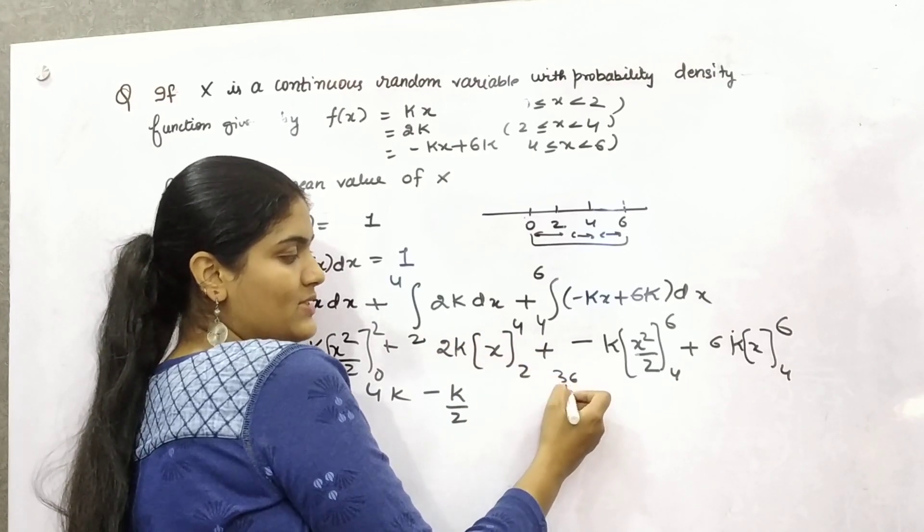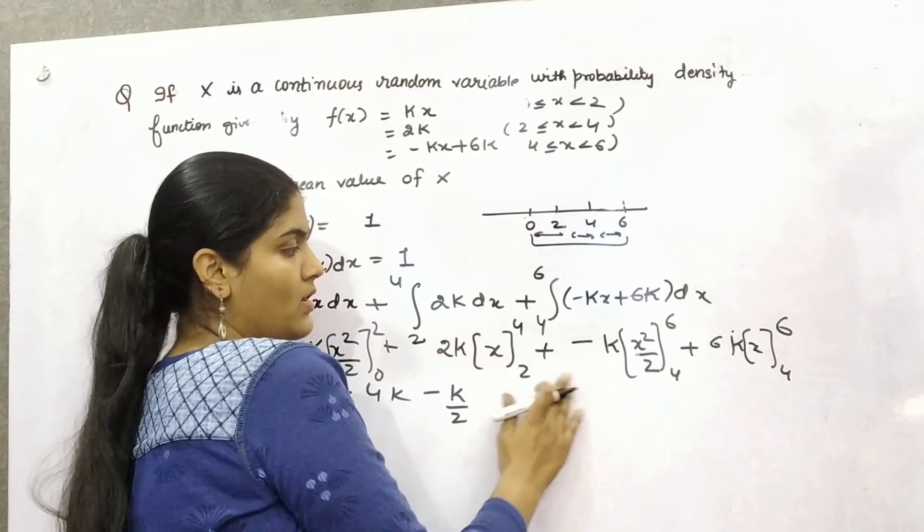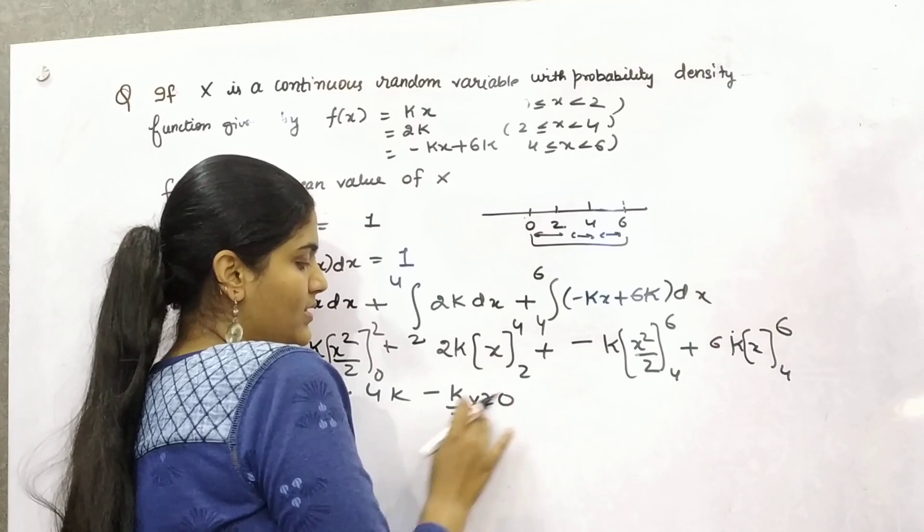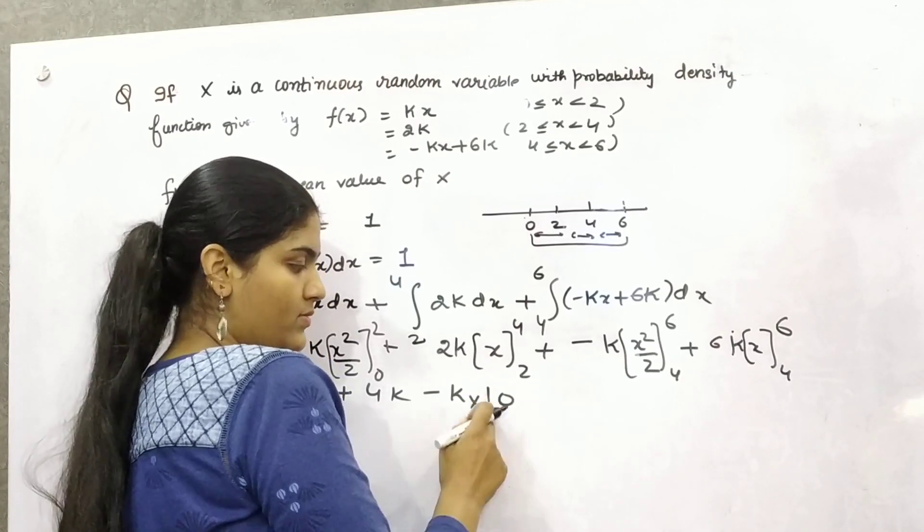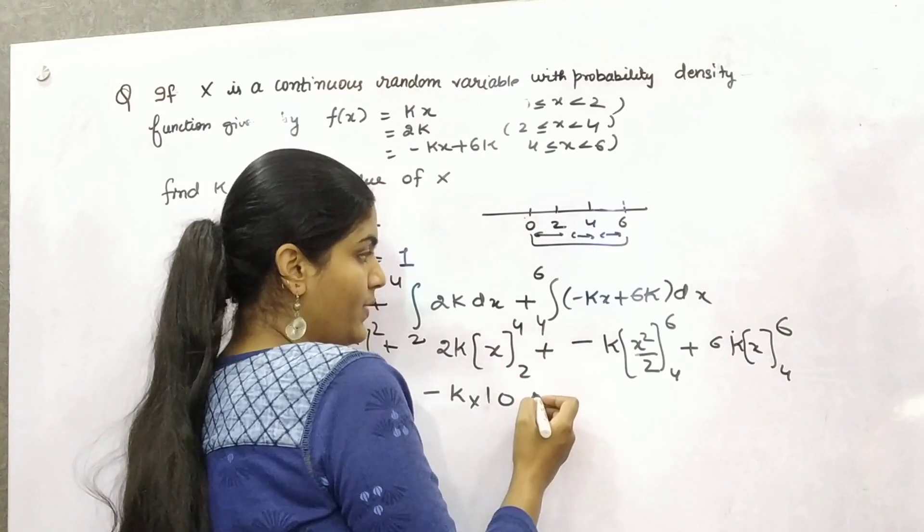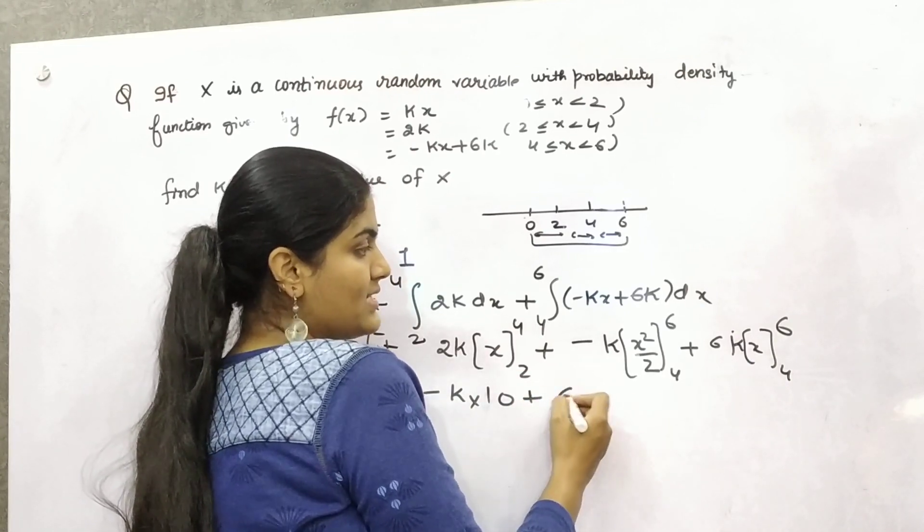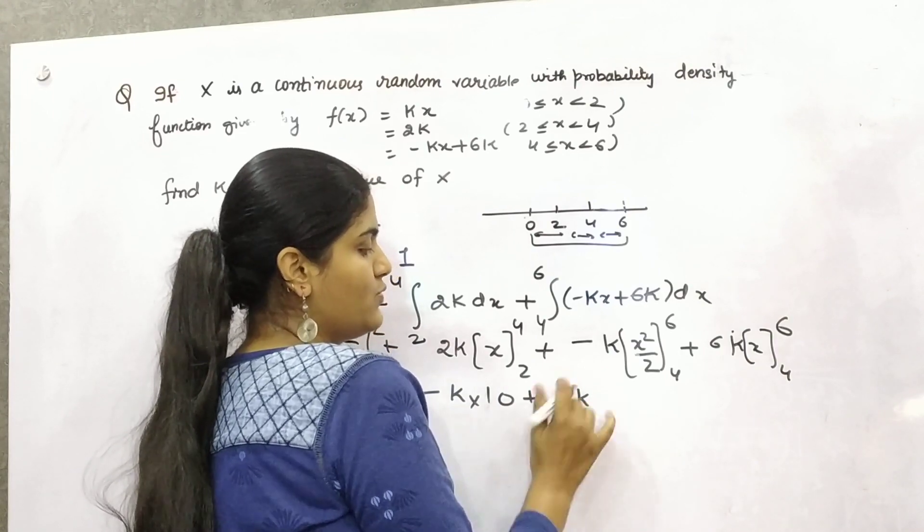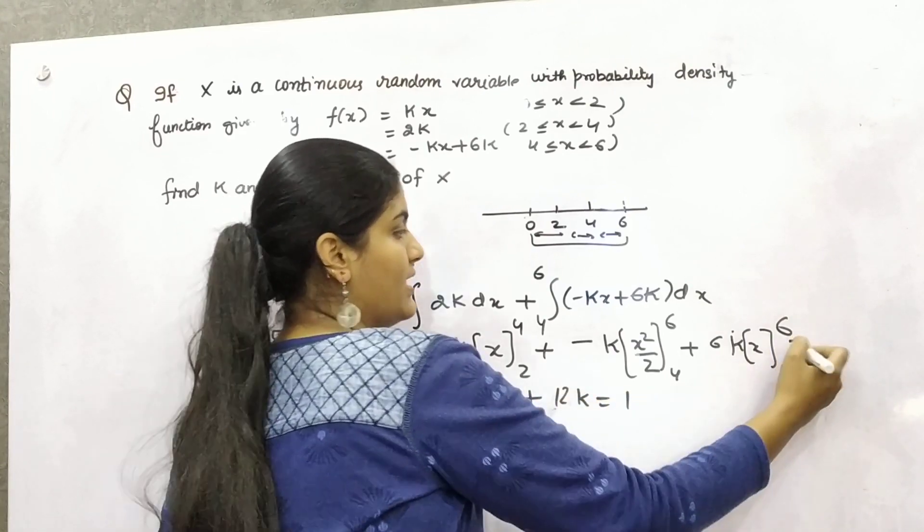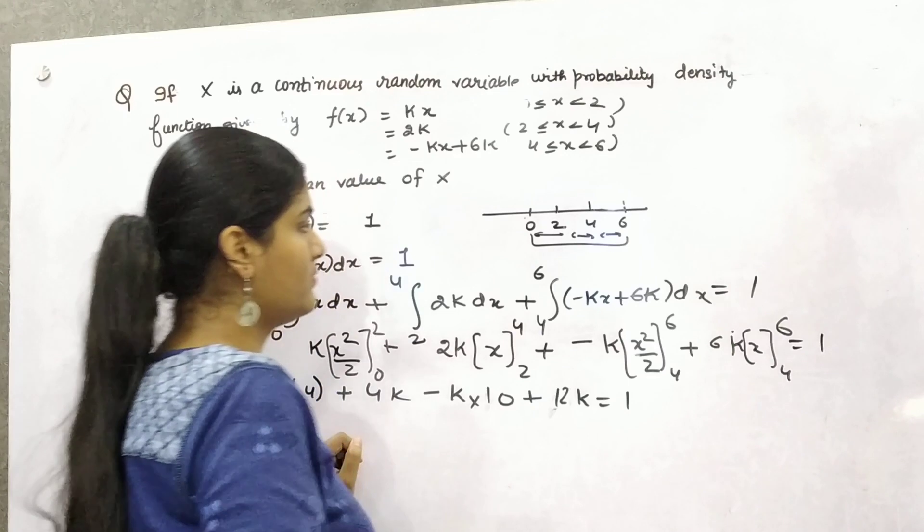So that means it will be 10, 20 divided by 2. Plus 6k, 6 minus 4 is 2, 6 times 2 is 12. That is equal to 1.